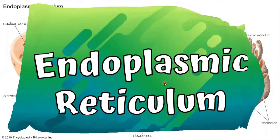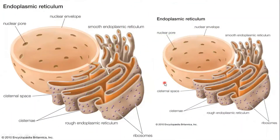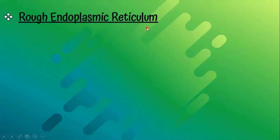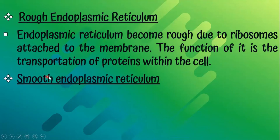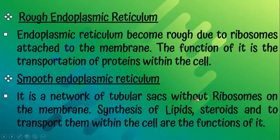Endoplasmic reticulum. The rough endoplasmic reticulum has ribosomes attached to its membrane. Its function is the transportation of proteins within the cell. The smooth endoplasmic reticulum is a network of tubular sacs without ribosomes on the membrane. The functions of the smooth endoplasmic reticulum are the synthesis of lipids and steroids and transporting them within the cell.